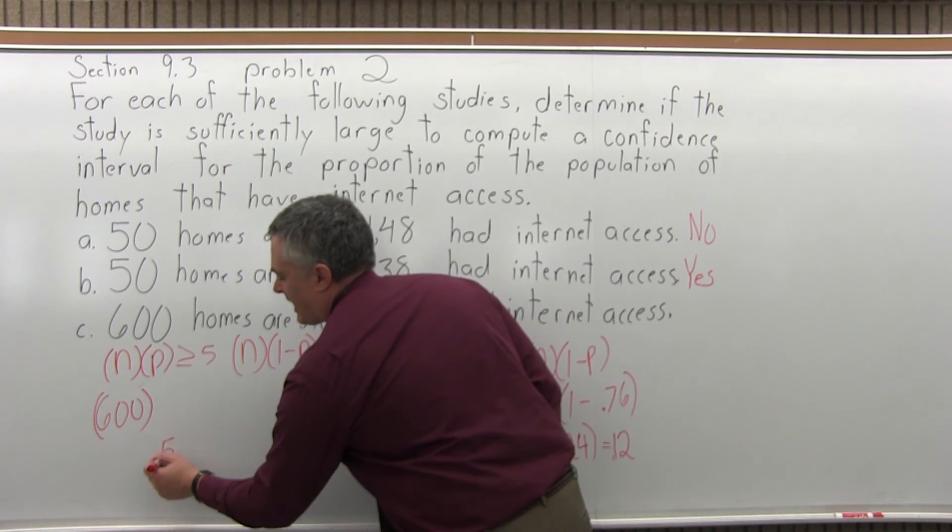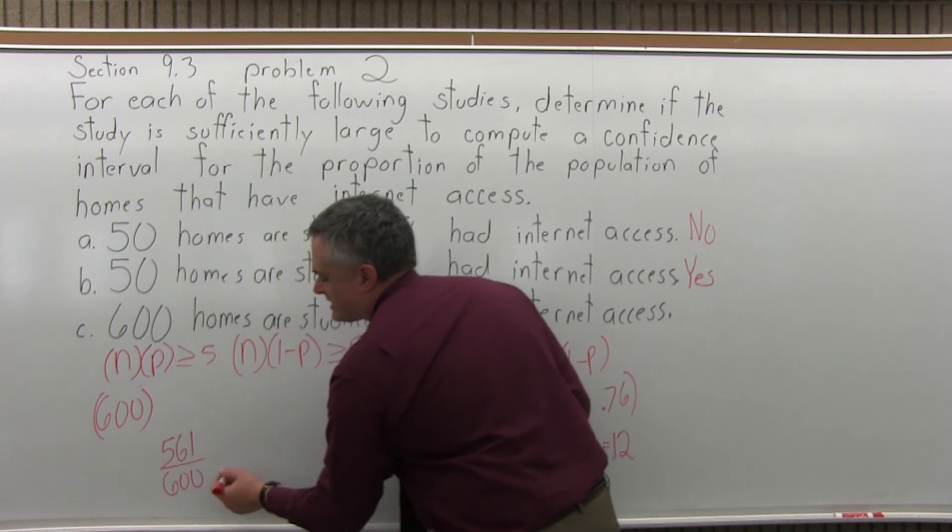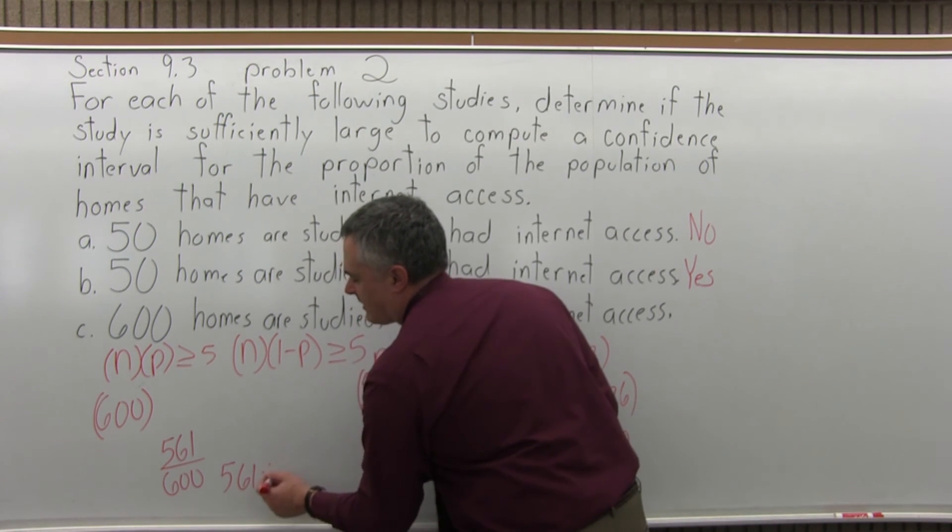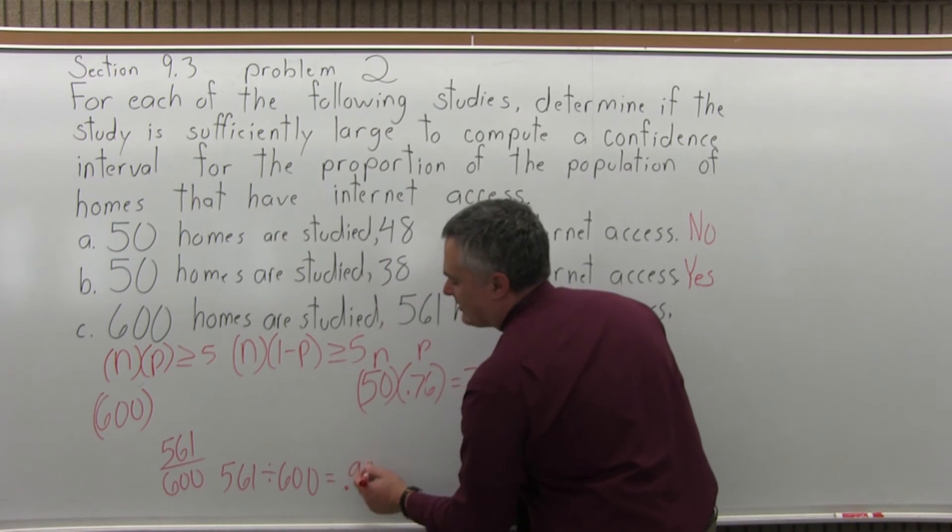So, p is 561 divided by 600. So, that's something you'll probably want to do with your calculator. 561 divided by 600 equals, and it's going to come out to .935.